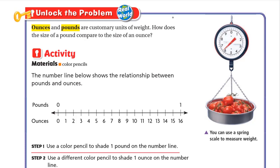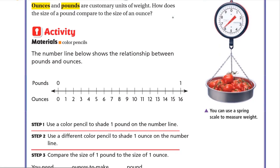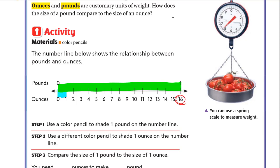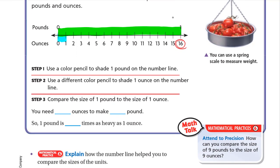Ounces and pounds are customary units of weight. How does the size of a pound compare to the size of an ounce? For this activity we need color pencils. The number line shows the relationship between pounds and ounces. We use one color to shade one pound on the number line, and down here this is one ounce. From what we can see, one pound is 16 ounces.